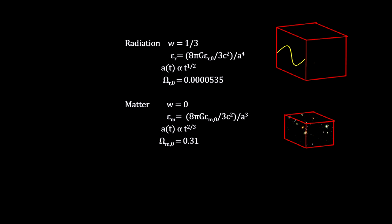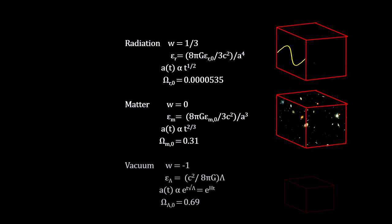Relatively still matter that exerts no pressure has W equal to zero and dilutes by the scale factor cubed. But vacuum energy density, with W equal to minus one, is a constant. It does not dilute.